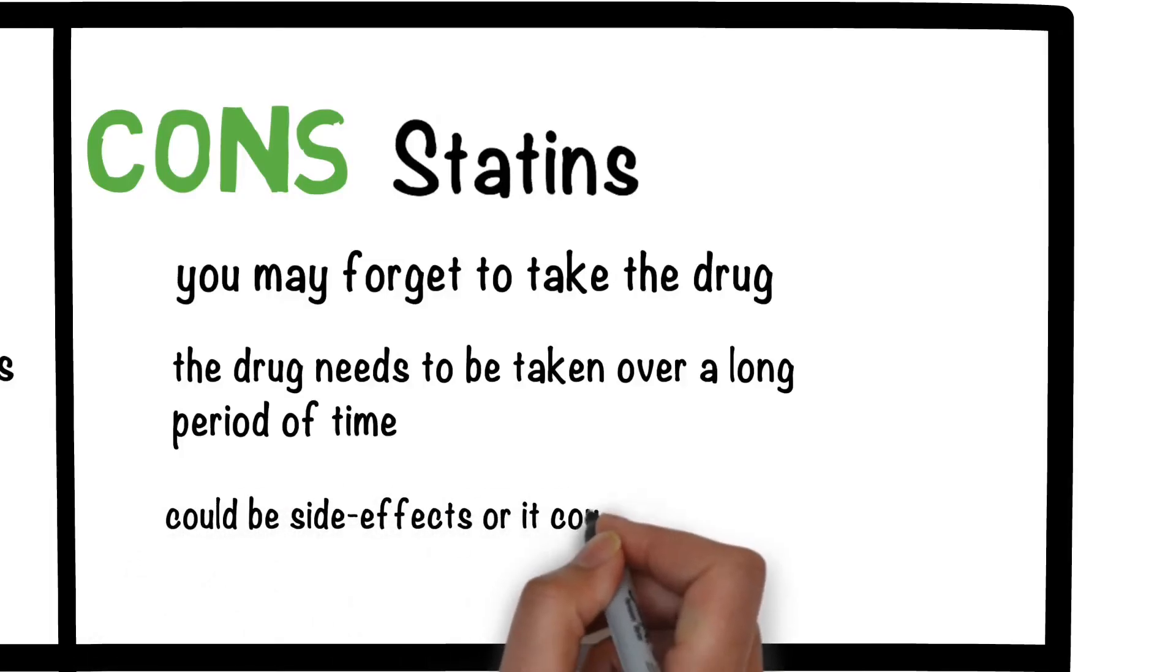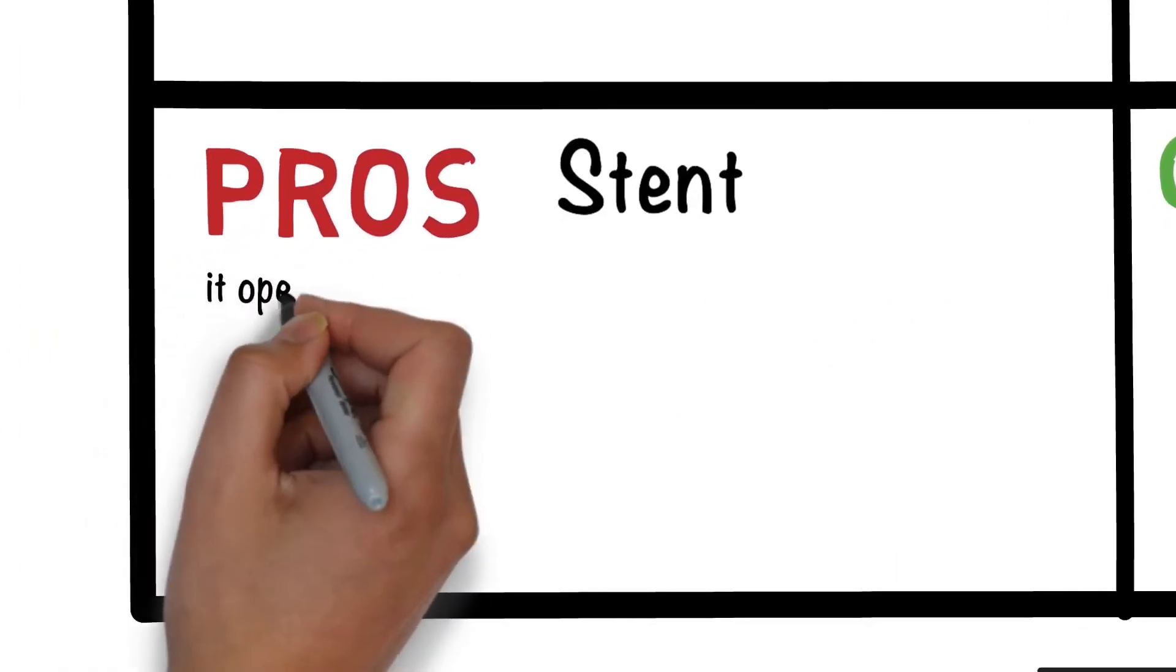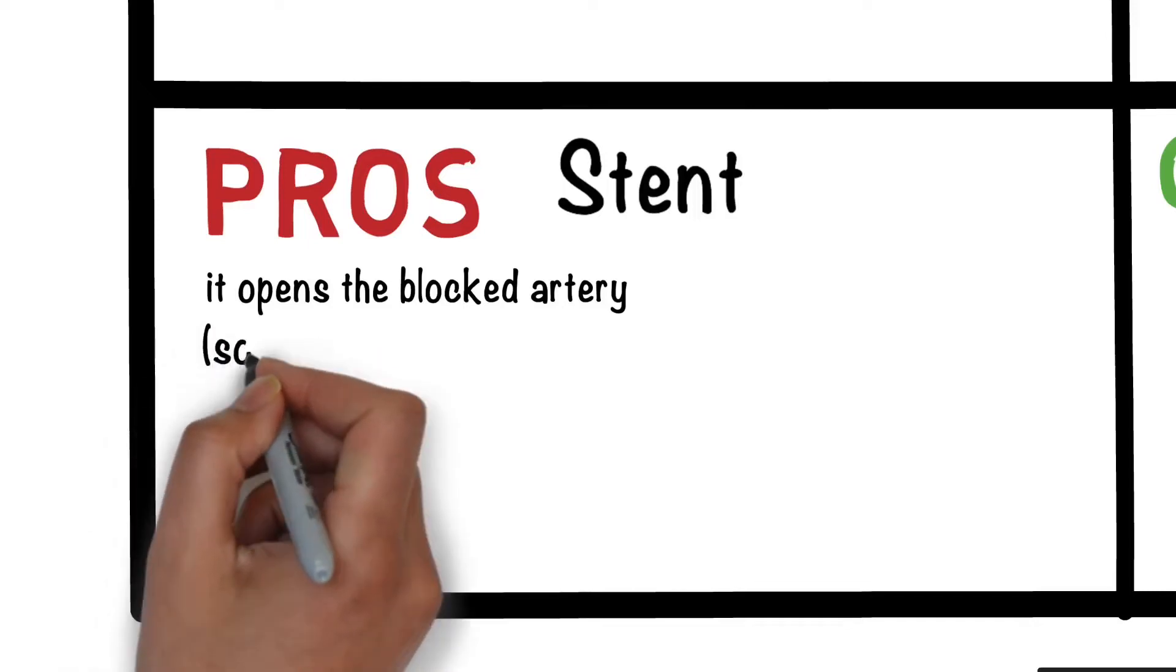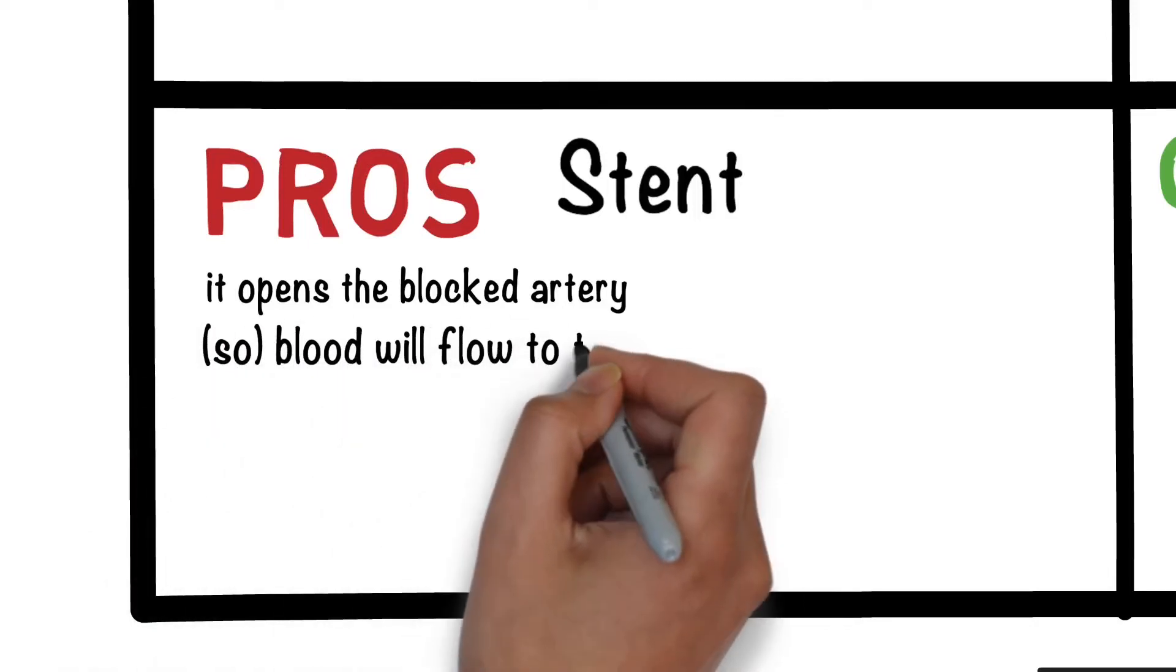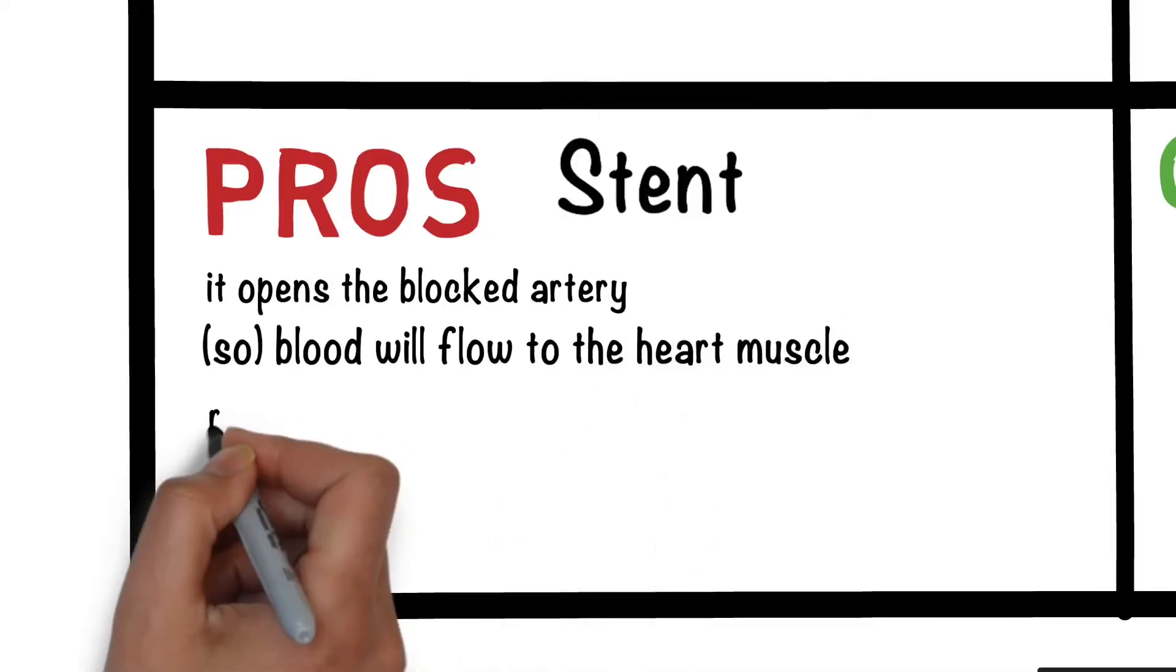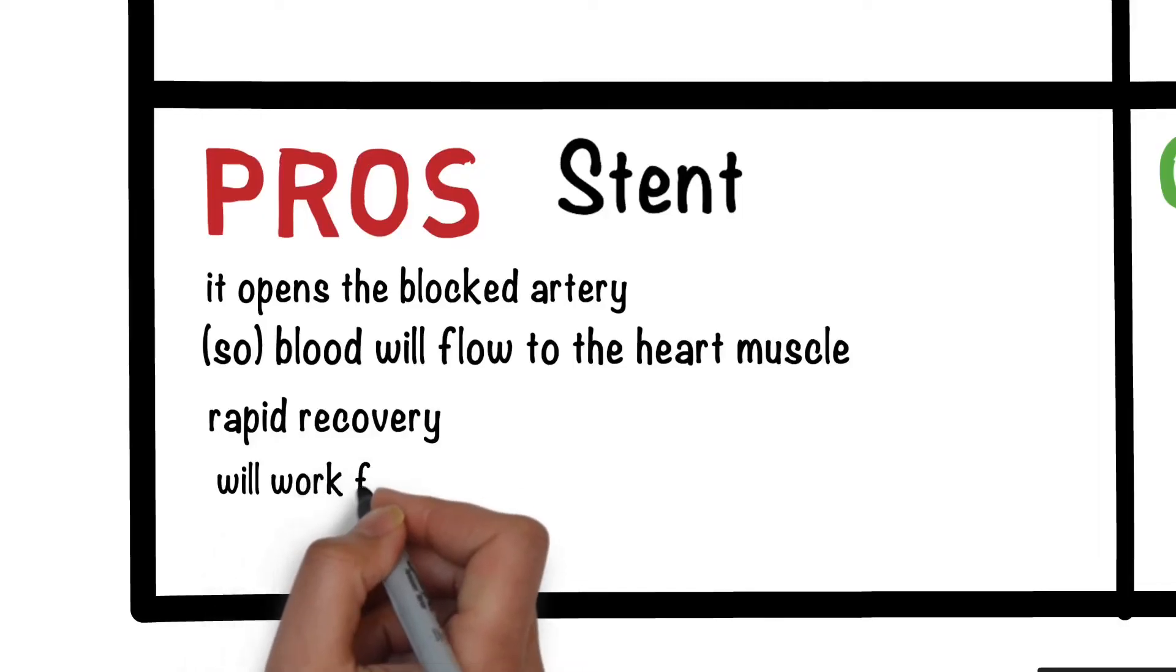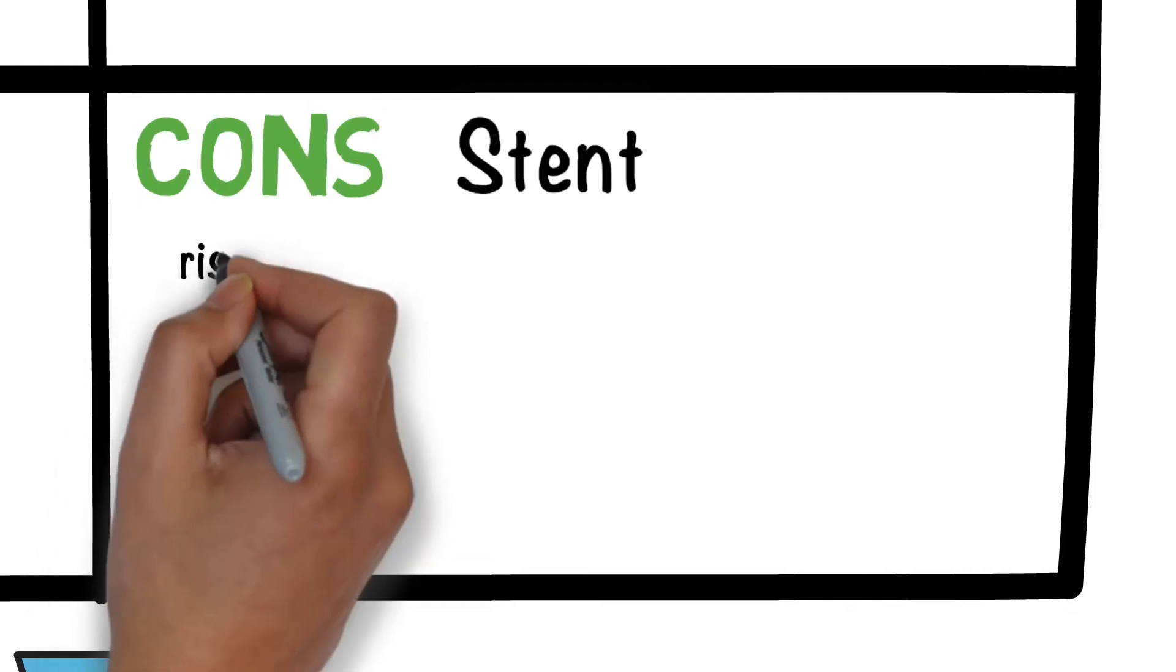With stents, the little mesh that holds the arteries open, it actually opens the blocked artery. That enables the blood to be able to flow through and past where the original blockage was quite easily to the heart muscle and you get a very rapid recovery. In other words it's instant once they do it and it will work for a long period of time. The actual stent stays in place for a long time.